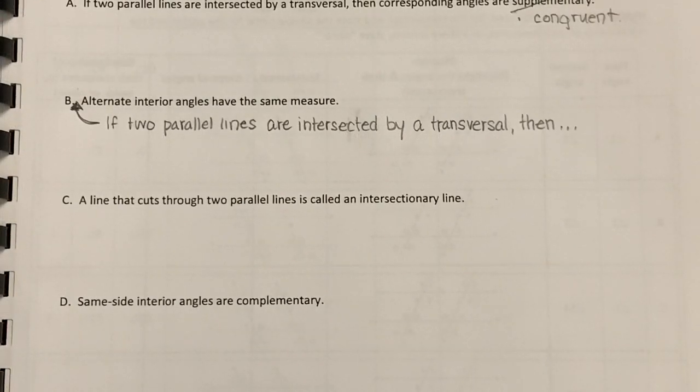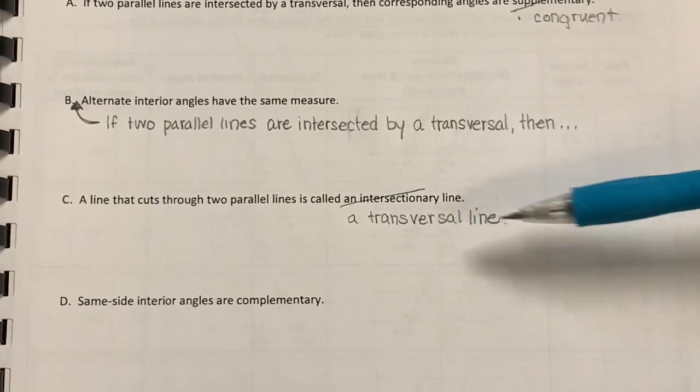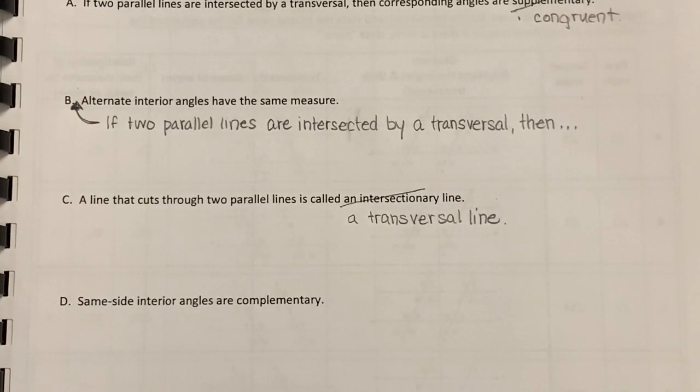C says a line that cuts through two parallel lines is called an intersectionary line. To fix this statement, we need to change intersectionary to transversal. A line that cuts through two parallel lines is called a transversal line.